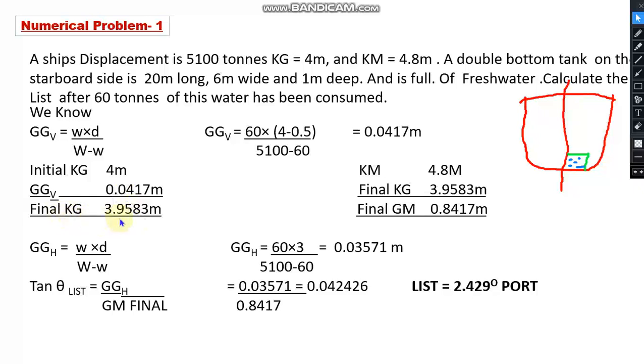So once I know the final KG, I can find out GM. KM is given to be 4.8 meters from the question. So the final KG we have calculated. So KM minus KG is GM. So this will be the final GM value.